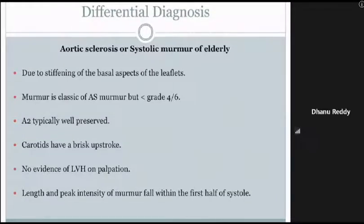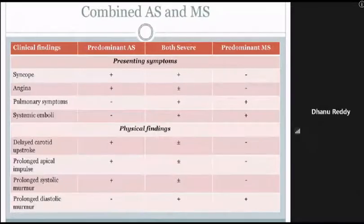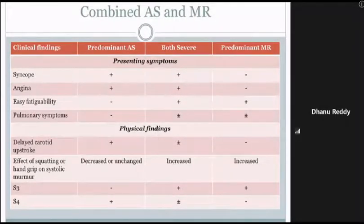In the differential diagnosis of aortic stenosis, aortic sclerosis produces a systolic murmur due to stiffening of the basal leaflet aspects — less than grade 4/6 — with well-preserved A2, brisk carotid upstroke, no LV hypertrophy on palpation, and murmur peak in the first half of systole. Mitral regurgitation murmur radiates to the axilla with a normal carotid pulse. Regarding differential diagnosis by type: acquired non-rheumatic, acquired rheumatic, hypertrophic subaortic, congenital valvular, congenital subvalvular, and congenital supravalvular stenosis are distinguished by history.